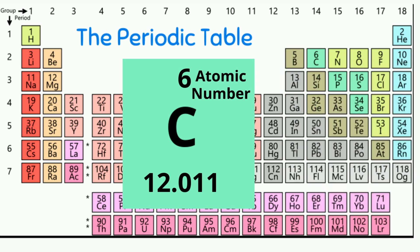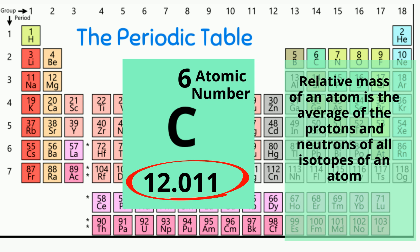Next let's try to find the number of neutrons. You will notice under the C a number 12.011, which is the relative mass of the element. The relative mass of an atom is the number of protons and neutrons found in the nucleus, and is the average of the masses of all the isotopes of a particular atom.